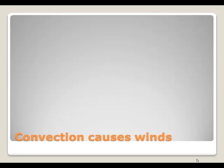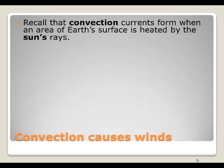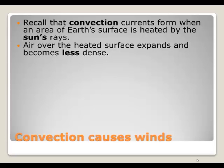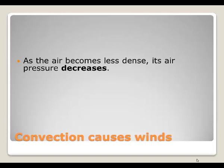Convection causes winds. Convection currents form when an area of Earth's surface is heated by the sun's rays at a different rate than other areas. So as air over the heated surface expands, it becomes less dense. As the air becomes less dense, its air pressure decreases.